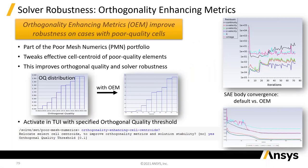Going back to the new orthogonal quality methodology: there's a new option under poor mesh numerics called 'orthogonality enhancing cell centroids'. Set it to yes and set a quality threshold. It uses the new enhanced orthogonal quality and improves things. You can see a case that was going nowhere improving once you've done this — it just tweaks the centroid position in the mesh cell to give that cell better performance when it's discretized.